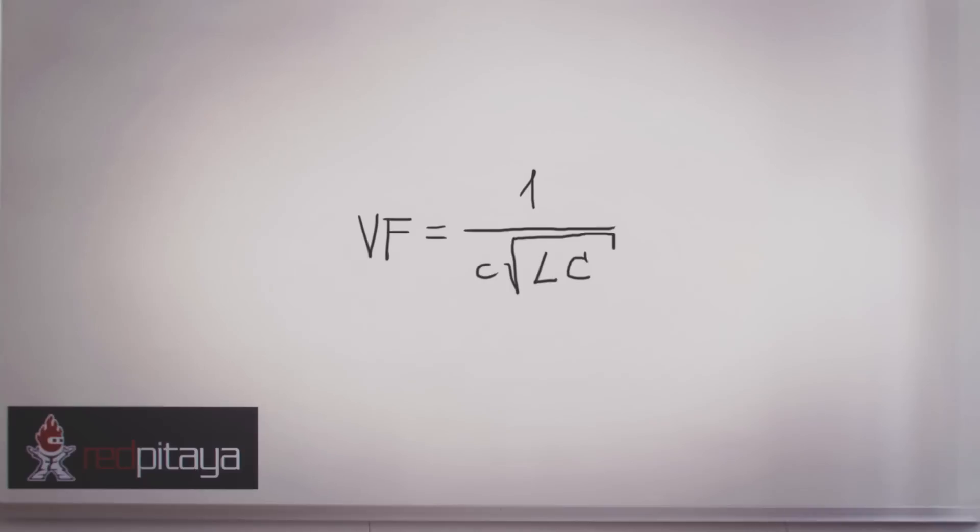Signal propagation speed depends on the dielectric between conductors. In coaxial cables, like the ones we have here, signal propagates with 66% of light speed. The incident wave travelling down the line has not any prior knowledge of what is at the end of the line and is only affected by the characteristic impedance.